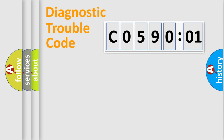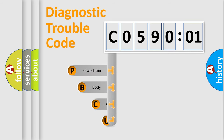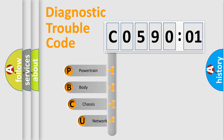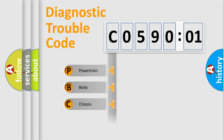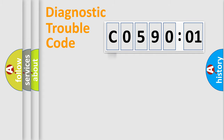First, let's look at the history of diagnostic fault code composition according to the OBD2 protocol, which is unified for all automakers since 2000. We divide the electric system of the automobile into four basic units: Powertrain, Body, Chassis, and Network.